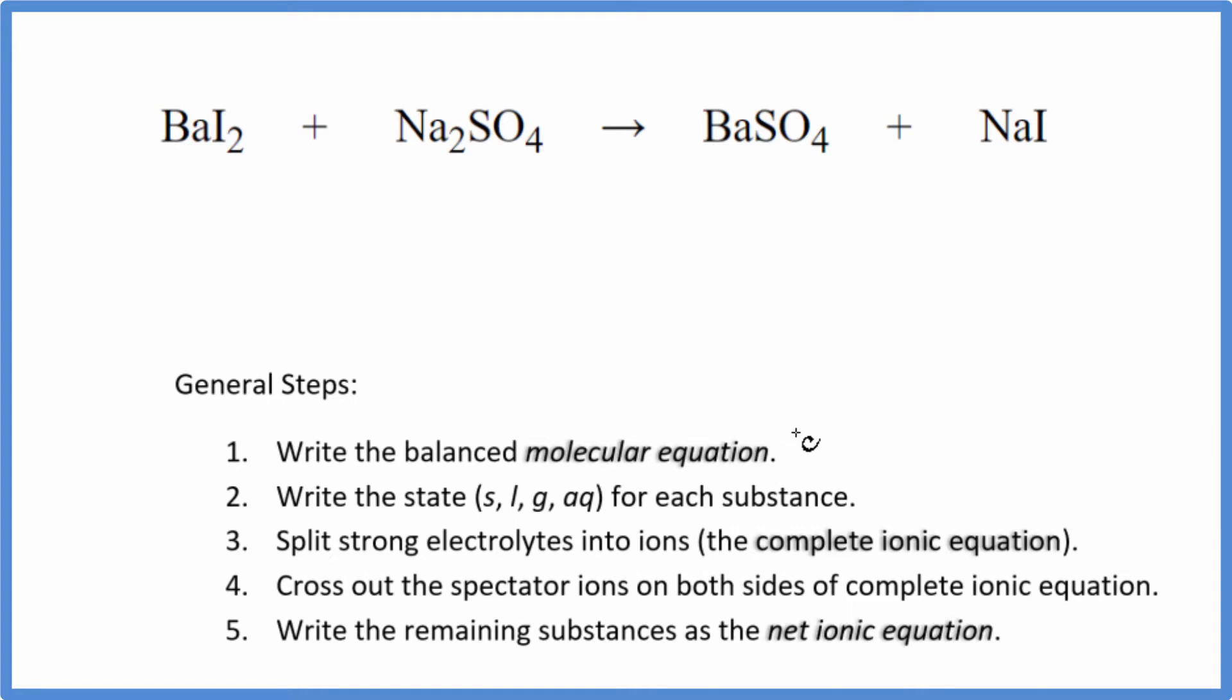First thing we need to do with net ionics is balance the molecular equation. I can see I have two iodines here and just one here. So if I put a two, that'll balance the iodine atoms. Then I have two sodiums, two sodiums, sulfate on each side, and a barium on each side.